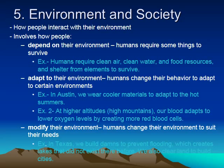Another example of adaptation is that at higher altitudes in high mountains, our blood adapts to lower oxygen levels by creating more red blood cells. The last aspect is modify — when humans actually change their environment to suit their needs. A good example is building dams to prevent flooding in Central Texas. The Highland Lakes are a way for Central Texas to control flooding and provide water, modifying the environment by creating lakes behind dams that didn't exist before. The dam itself is a human characteristic, but the reservoir lake is kind of both — it wouldn't exist naturally without humans building the dam, but it is a body of water.